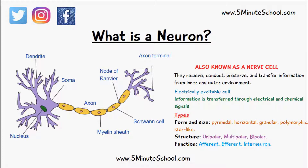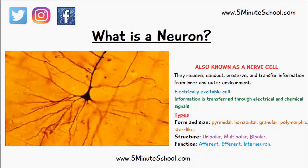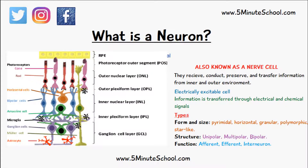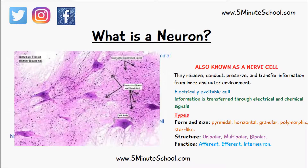We can also classify neurons based on their type — based on their form and size, based on their structure, and based on their function. There are different forms and sizes of neurons and they basically have different shapes: pyramidal, horizontal, granular, polymorphic and star-like.